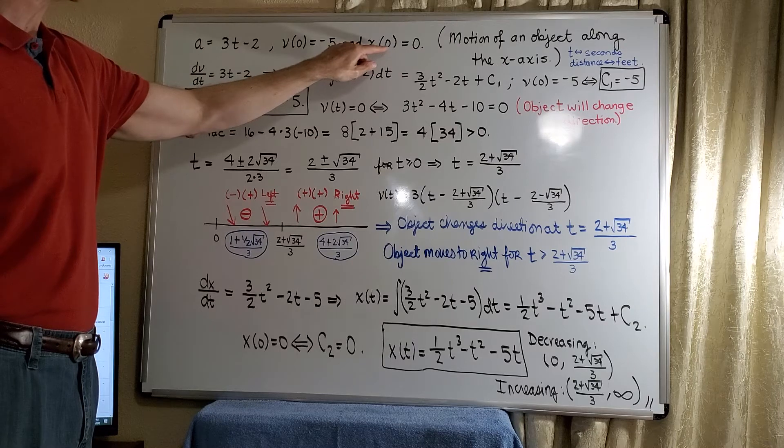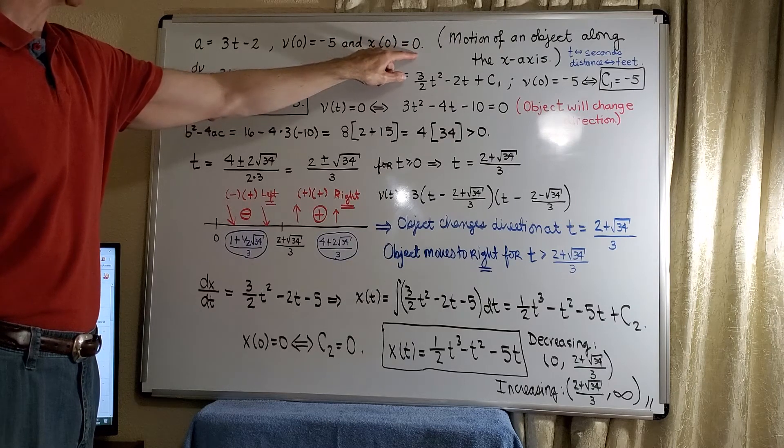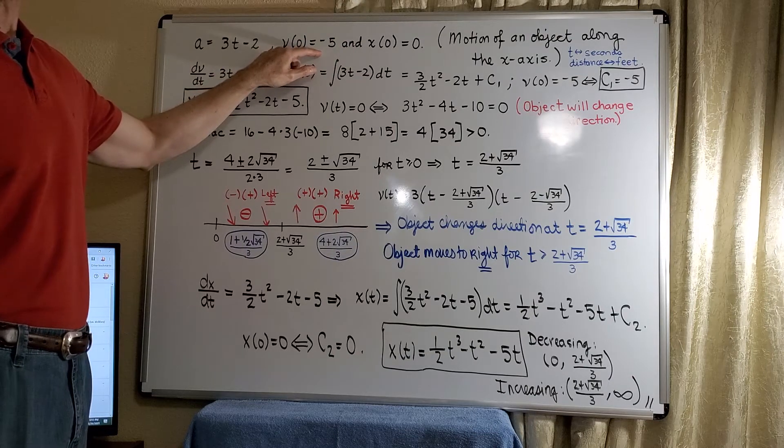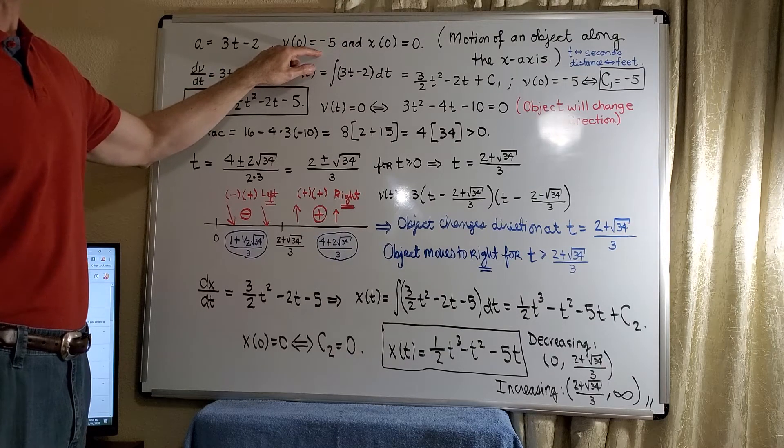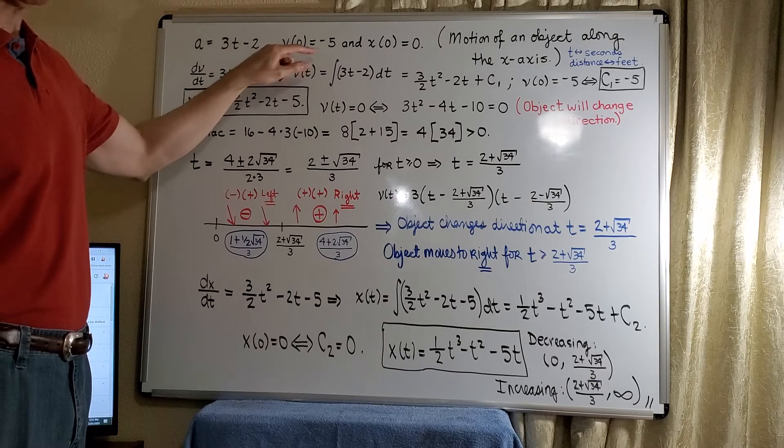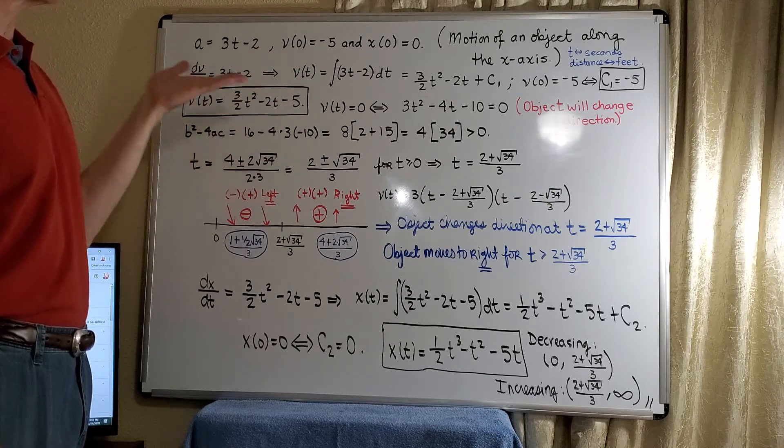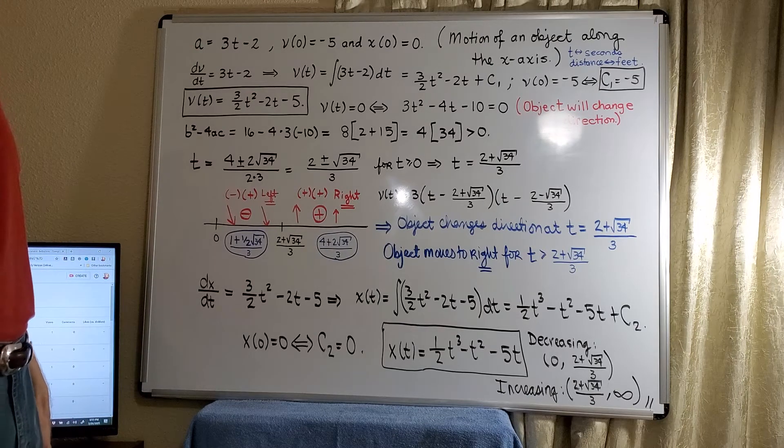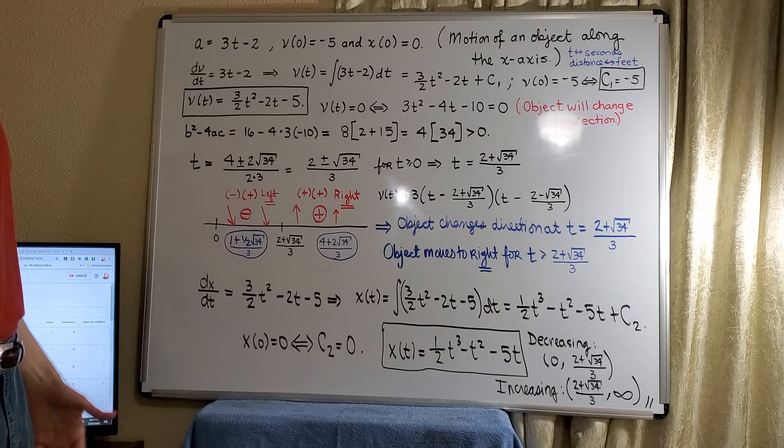So at time t equals 0, the object is at the origin, and it has a velocity moving in the direction to the left of the origin. That is negative. So this is basically the kinematics that describe the motion of this object.